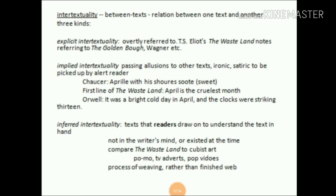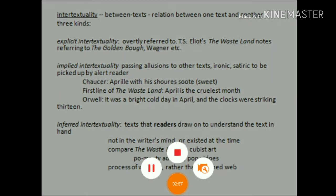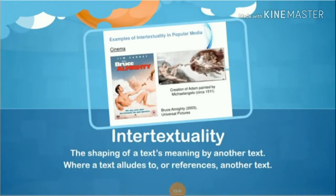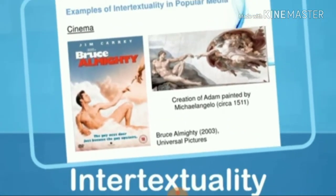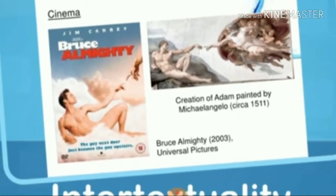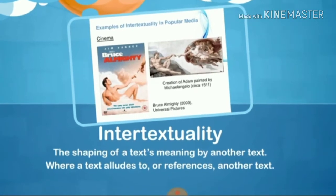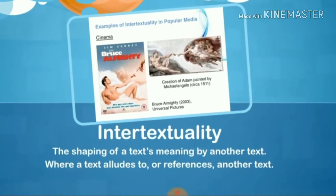So we now know about three kinds of intertextuality. Let's look at some examples to make the meaning clearer. Here you can see Bruce Almighty and the 'Creation of Adam' painted by Michelangelo. This is an example of intertextuality — the shaping of a text's meaning by another text, where one text alludes to or references another.